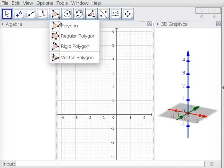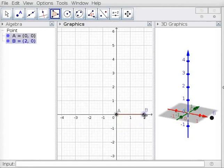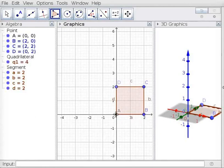In 2D graphics view, click on the polygon tool and click on origin 0,0. This creates point A at the origin. Then click on 2,0 to create point B. Click on 2,2 for C, and on 0,2 to draw D. Finally, click again on A. Note that a quadrilateral Q1 is seen in 2D and 3D graphics views.